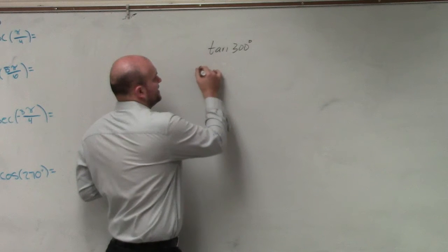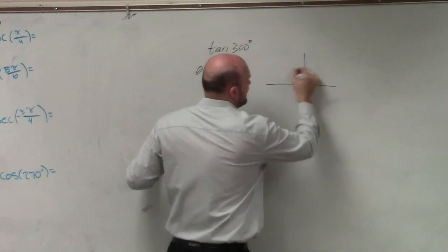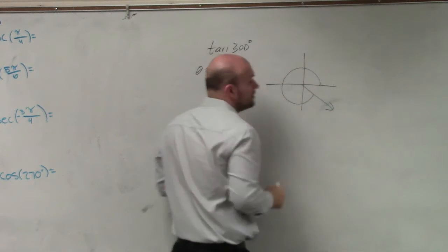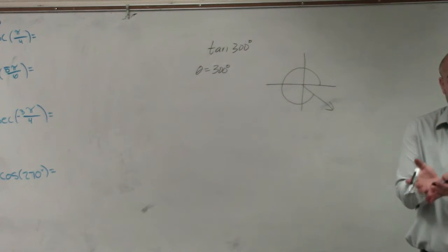So if I have theta is 300 degrees, you can graph this. We know how far is that away from going all the way around the circle? 60.